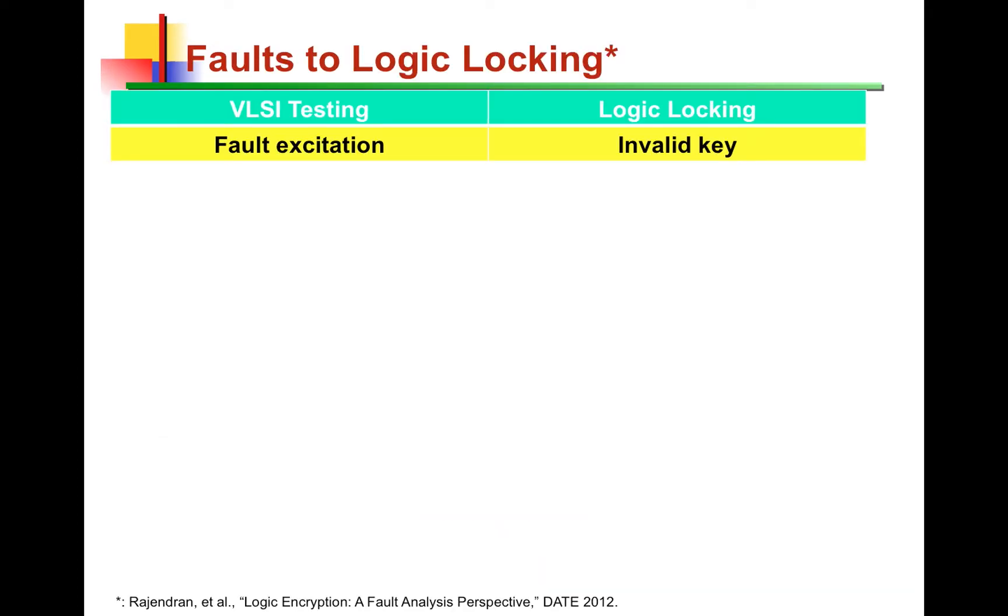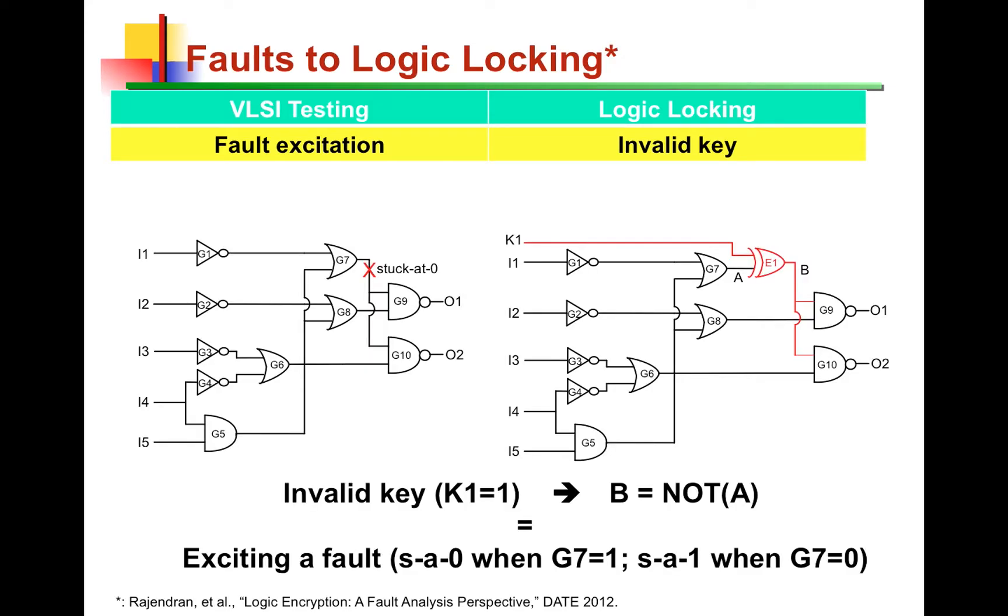Next, we make the connection between faults and the application of invalid keys in the context of logic locking. So, fault excitation refers to a fault, faulty net, receiving a value, and then the error being introduced right there. For instance, stuck at 0 net, receiving a value of 1, and then an error is produced on that net. Now, in the context of logic locking, on the example on the right, we have this key gate, the XOR gate E1. If it receives a value of 1 from K1, which is the incorrect value of the key, then, effectively, the XOR gate acts like a NOT gate and inverts A. This is very similar or identical to the behavior of a stuck at 0 on that net being excited.